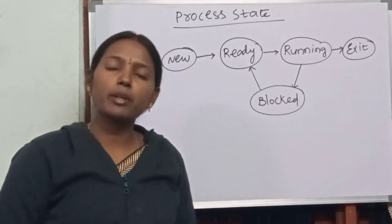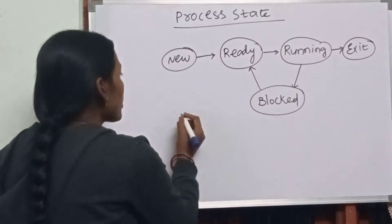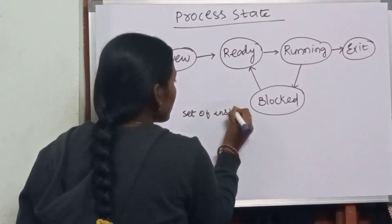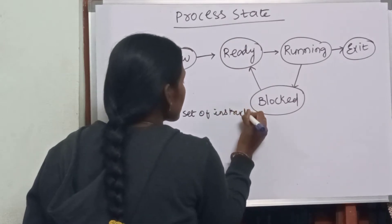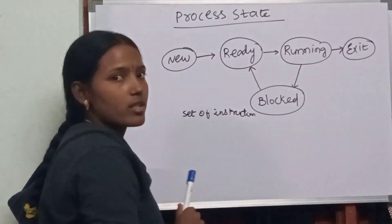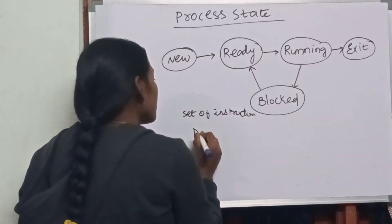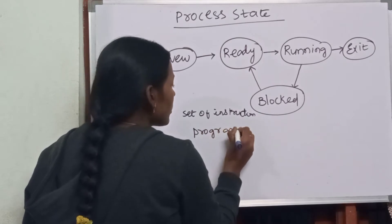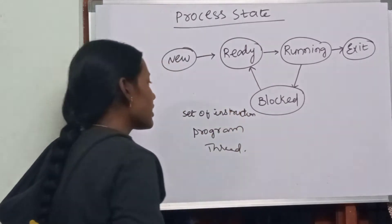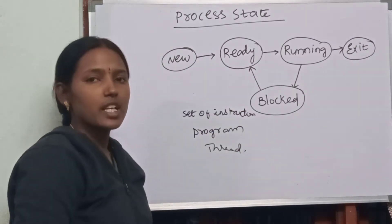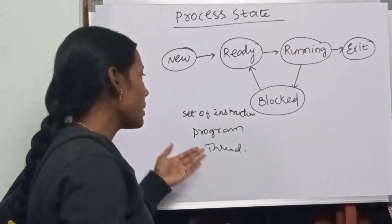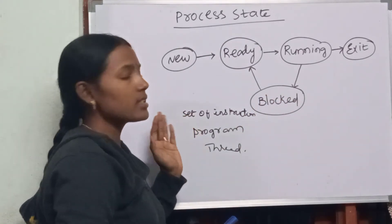First we need to understand what is meant by a process. A process is nothing but a set of instructions to be executed by the operating system. We can also say a process is a program or a thread — a set of instructions to be executed to perform a specified task. We can also call that as a process.